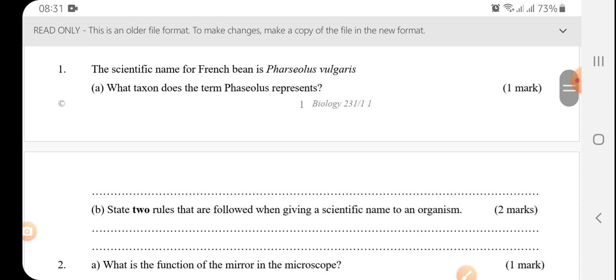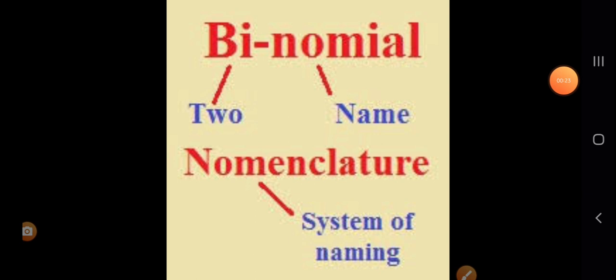The scientific name for a French bean is Phaseolus vulgaris. I will start by explaining this method of naming. So this method is called binomial nomenclature, whereby means two, nominal name, nomenclature, system of naming.